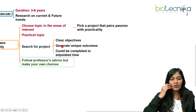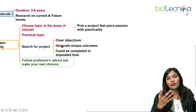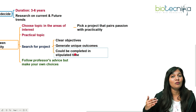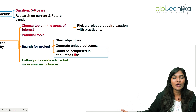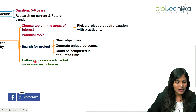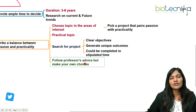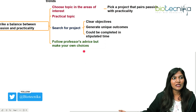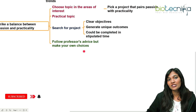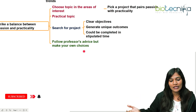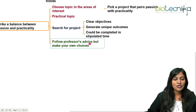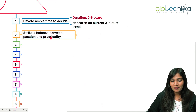The second tip is to search for projects that have a clear objective — what you're going to do in the project — with a unique and different outcome, and one you can complete within a stipulated period of time. It's also important to follow your professor's, PI's, or guide's advice, but make your own choices. You're going to pursue your passion with practicality, so while it's good to follow the professor's advice, ultimately you can make your own choices.